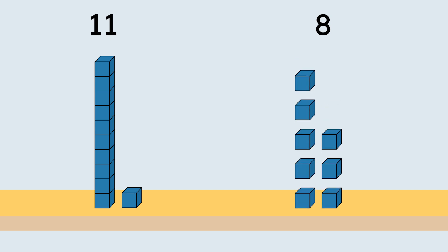How many 10s does 11 have? 1. And how many 1s? Also 1. 8 only has 1 digit, which means it doesn't have any 10s. 8 is made up of 8 1s.